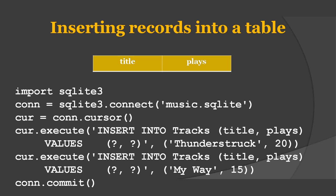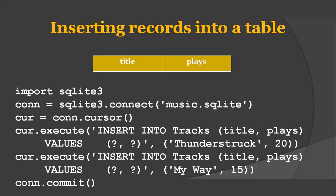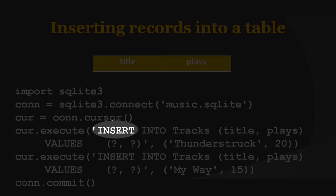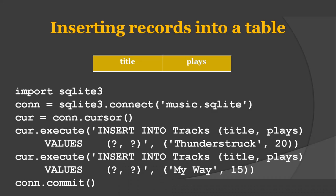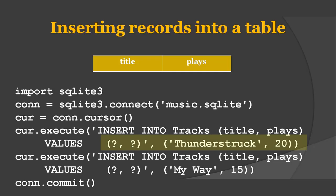If you look at this code, we begin by making a connection to the database and obtaining the cursor. We can then execute SQL commands using this cursor. Next we use the SQL INSERT command which indicates which table we are using and then defines a new row by listing the fields we want to include — that is, title and place in this case — followed by the values we want to be placed in the new row. We specify the values as question marks to indicate that the actual values are passed in as a tuple — for example, 'my way, 15' — as a second parameter to the execute call.